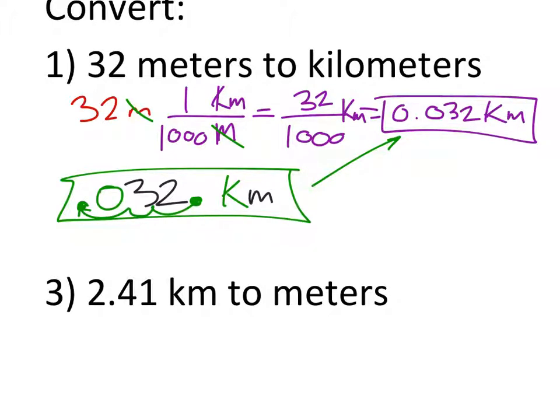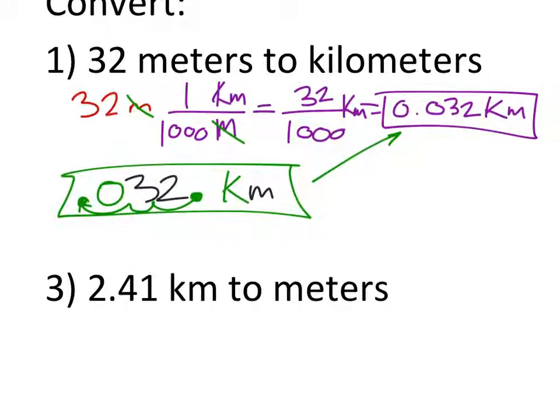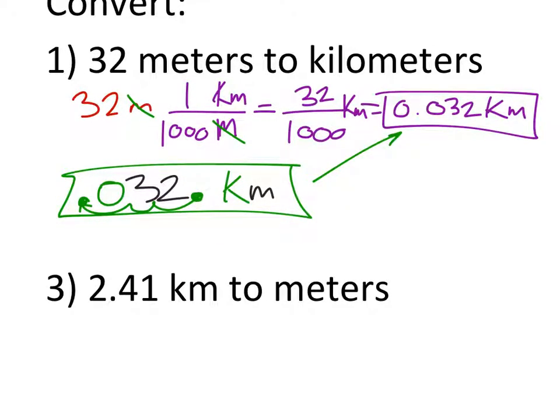So let's look at number three. 2.41 kilometers. So if I had 2.41 kilometers and I wanted to change it to meters, well, we know there's a thousand meters for every kilometer. So I'm taking something big and I'm looking at the smaller units. So there's more smaller units and that means that I'm going to have to move this decimal to the right three places. So this ends up being 2,410 meters.